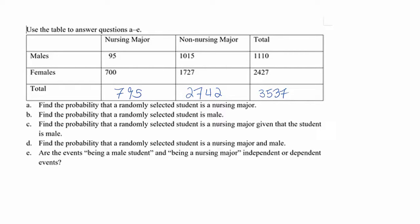Letter A: find the probability that a randomly selected student is a nursing major. A and B are kind of simple because A will be nursing major, which is 795 over 3537, and then B, male, will be 1110 over 3537.